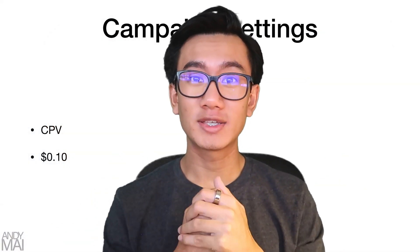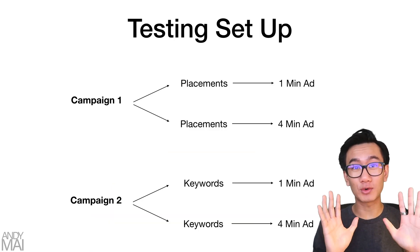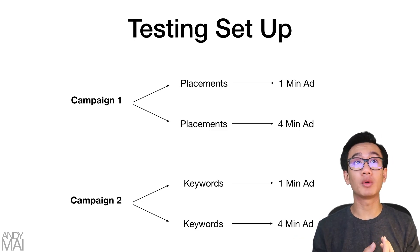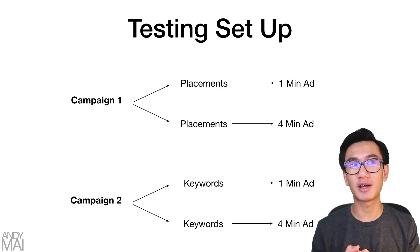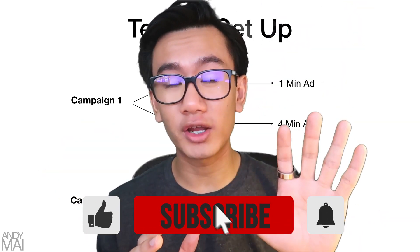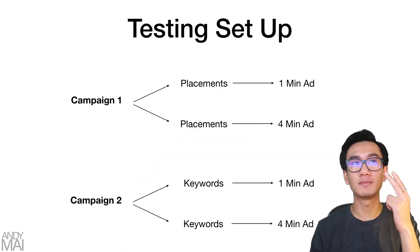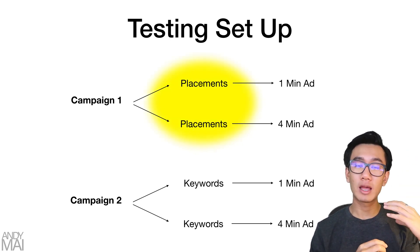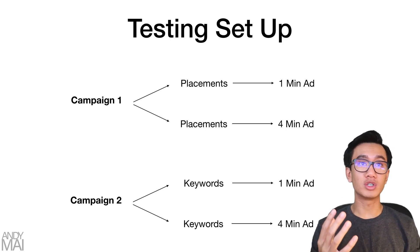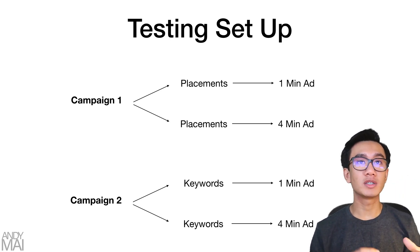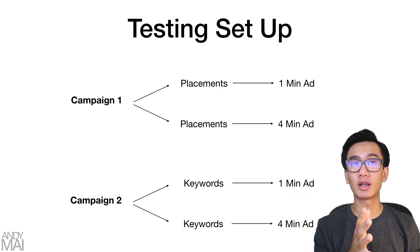Here's the testing blueprint — the golden nuggets. You're going to have two campaigns. Campaign one is just for placements; campaign two is just for keywords. The reason you split them up is so that YouTube and Google spend an even amount on placements versus keywords. If you put placements and keywords under the same campaign, Google won't spend the budget evenly — that's why you separate them.